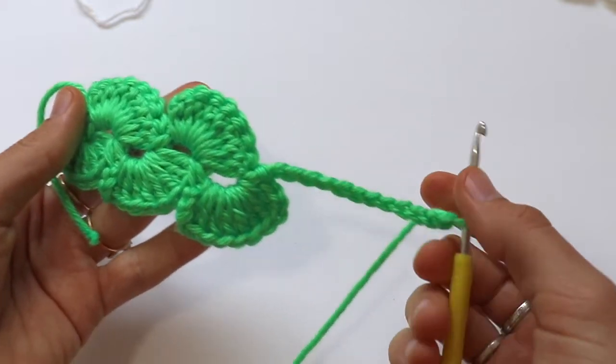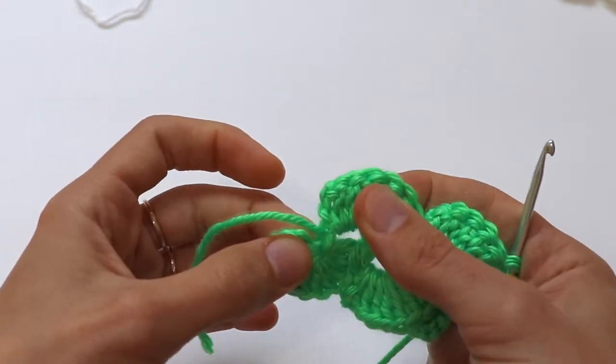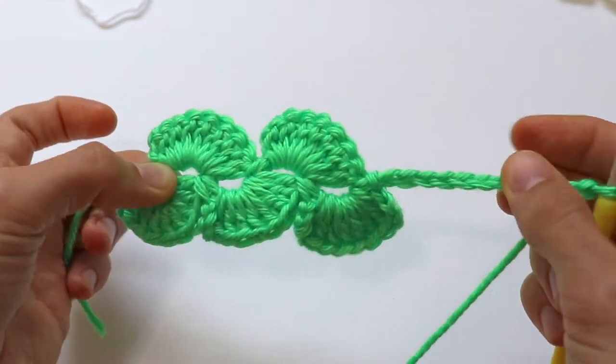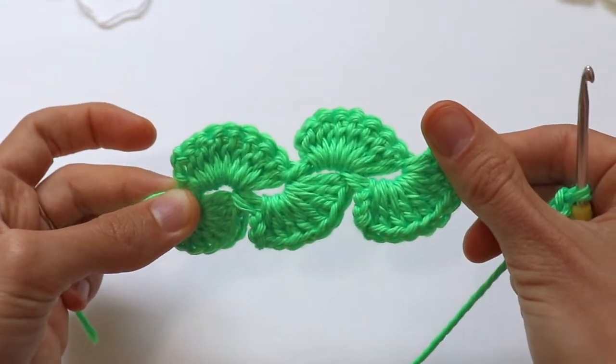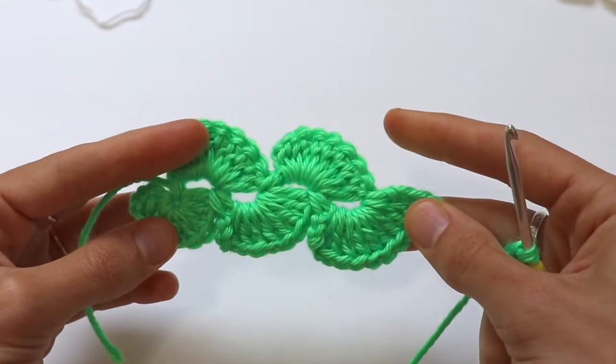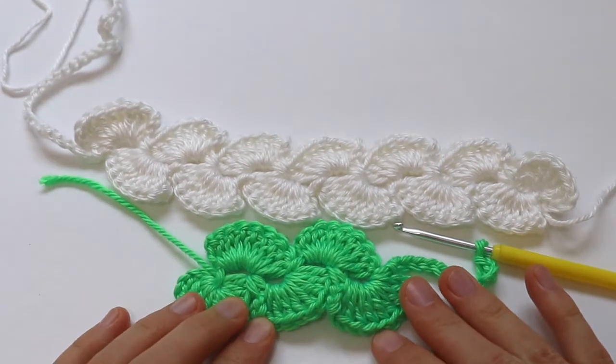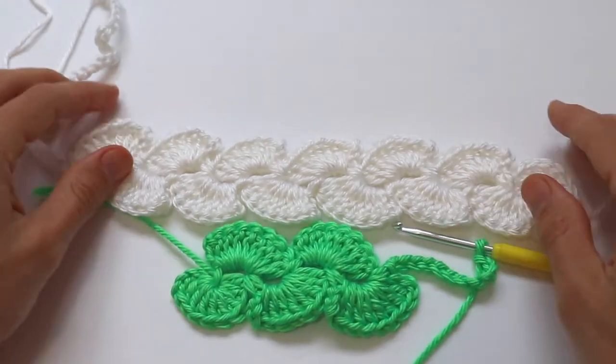Then, from one side, you join the yarn in this ring and repeat the same. Make chain as long as you need. That's how it looks.